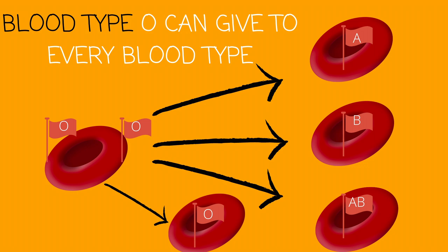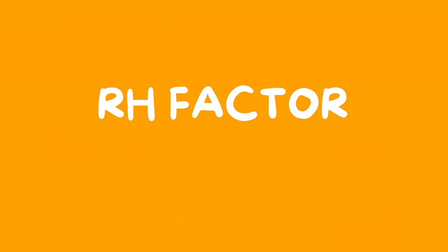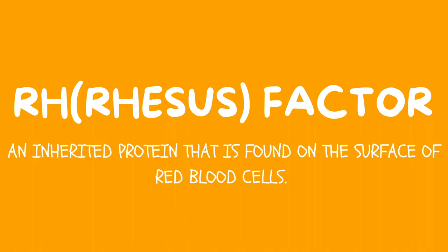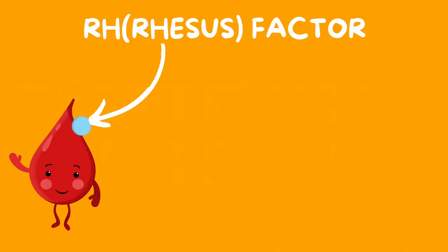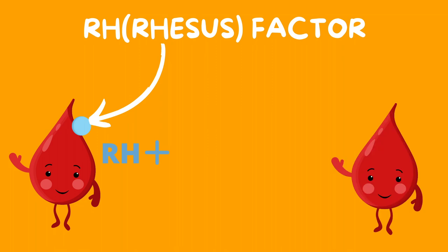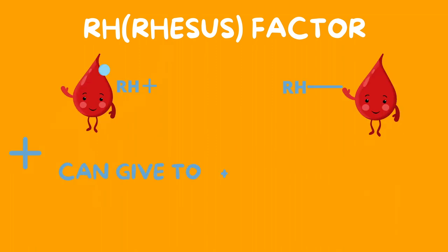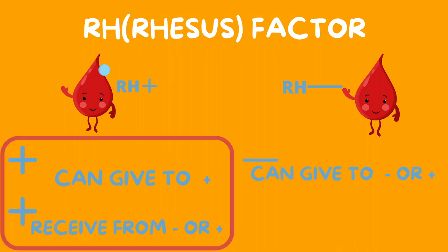That wraps up the compatibilities of giving blood. Lastly, I'd like to explain the RH factor, also known as the rhesus factor. This is a protein that is found on the surface of red blood cells. Blood either has the RH factor or it doesn't. If it does have the RH factor, then this blood is known as positive. If the blood does not have the RH factor, then this is known as negative. A positive RH factor can give to another positive and it can receive from a negative or a positive. A negative RH factor can give to a negative or a positive, but it can only receive from another negative.